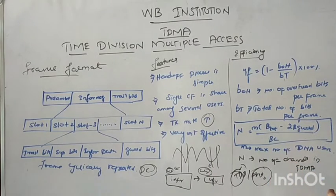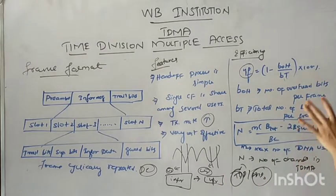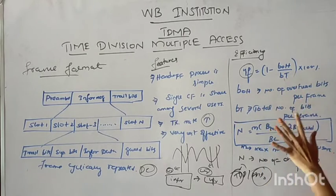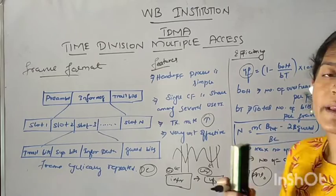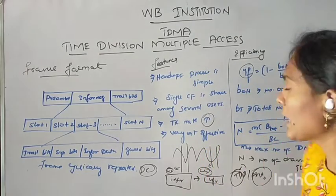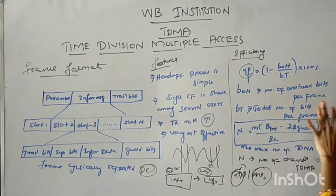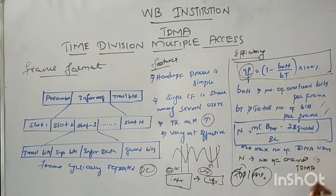Next, efficiency calculation in TDMA. The efficiency formula is: eta_F equals 1 minus (B_OH divided by B_T), multiplied by 100%. Here, B_OH is the number of overhead bits per frame — these are extra bits added per frame. B_T is the total number of bits per frame. This is the efficiency formula.